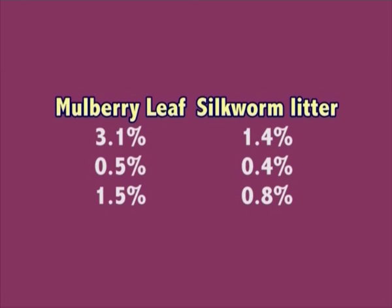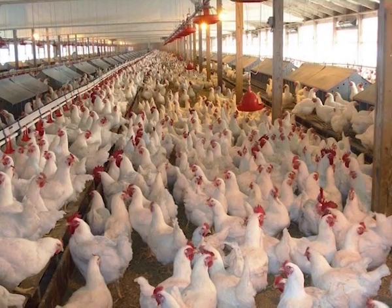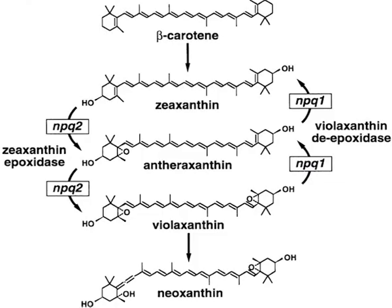The manure adds sufficient amounts of nitrogen, phosphorus, and potassium to the soil, because the amounts of these three substances present in leftover mulberry leaf and in silkworm litter are 3.1%, 0.5%, and 1.5% respectively, and 1.4, 0.4, and 0.8 respectively. Litter as Animal Feed: Silkworm litter is used primarily as animal feed for cows, sheep, pigs, buffaloes, and poultry. Hens fed on them lay more and larger eggs because the silkworm contains high protein content. The eggs laid by hens fed with 20% silkworm litter mixed with their normal feed contain more xanthophyll.